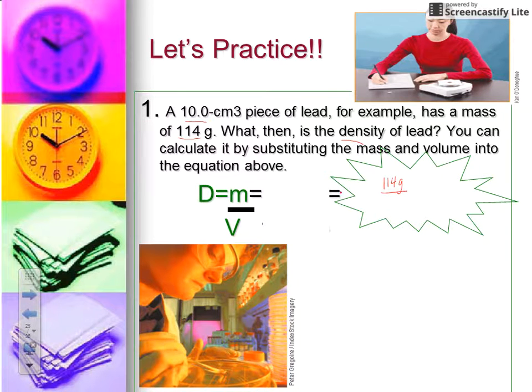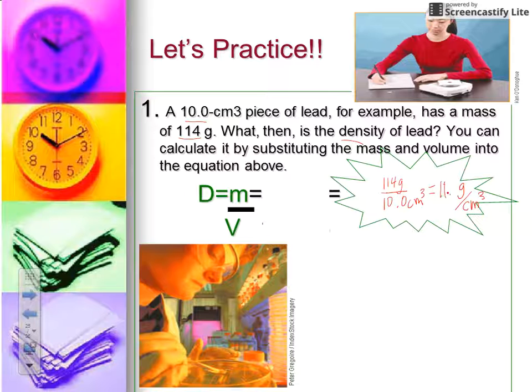That's going to give you for your answer a unit in grams per centimeter cubed because the units do not cancel. Density is a derived unit. So if you take 114 and you divide that by 10, you're going to get 11.4, and that's going to be your final answer. We will do some more of these calculations in class. That's our lesson for today.